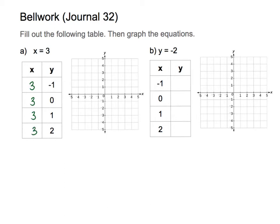If I treat these as a coordinate system, these tables help us plot coordinates. This says x equals 3, which is right here, but y equals negative 1, which is down here. I'll plot my point, then the next one: 3, 0 is right here on the x-axis, then 3, 1 is 3 and up 1, and 3, 2 is 3 and up 2.